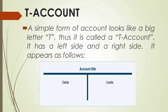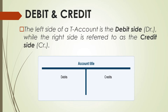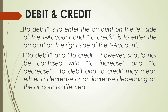The T-account. A simple form of account looks like a big letter T, thus it is called a T-account. It has a left side and a right side. You have the account title, the debit on the left side, and credit on the right side. The left side of a T-account is the debit side or DR, while the right side is referred to as the credit side or CR. To debit is to enter the amount on the left side of the T-account, and to credit is to enter the amount on the right side of the T-account.